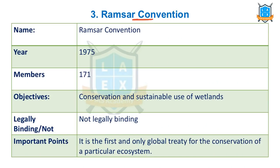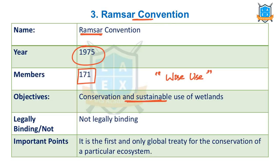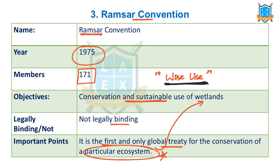The third important convention in news is the Ramsar Convention. Ramsar is a city in Iran where world countries signed this convention. It is effective from 1975. There are 171 member countries. The objective is for sustainable conservation and sustainable use of wetlands — the concept of 'wise use of wetlands,' meaning we use the services and products of wetlands wisely without over-exploiting them. It is not legally binding.